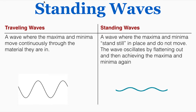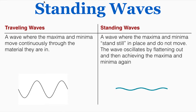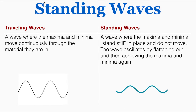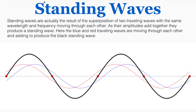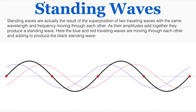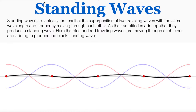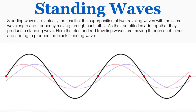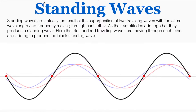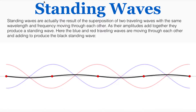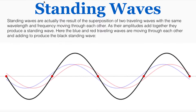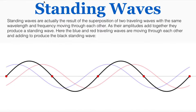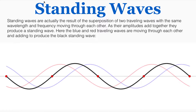This seems like a pretty subtle difference, but standing waves are really key to understanding a ton of stuff that happens in physics. Standing waves are actually the result of the superposition of two traveling waves with the same wavelength and frequency moving through each other. As their amplitudes add together following the rules of superposition, they produce a single standing wave.